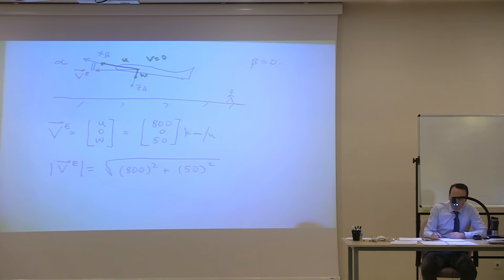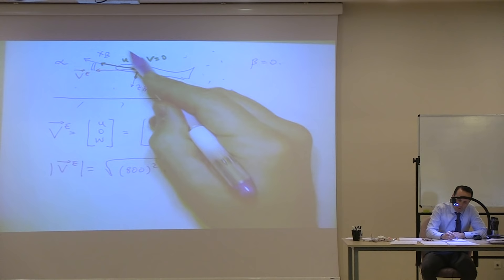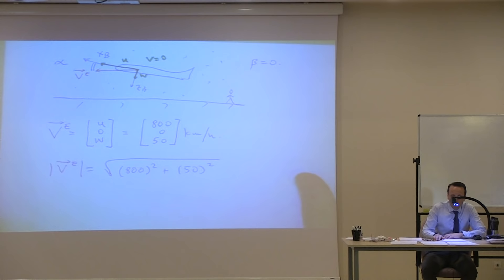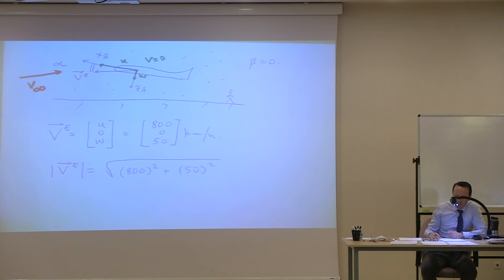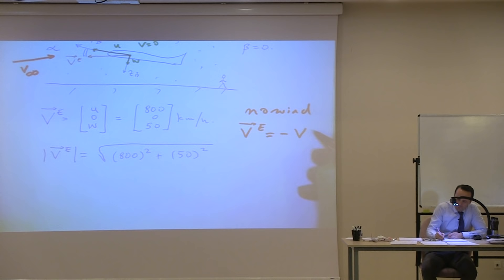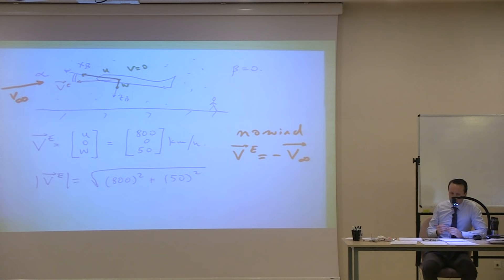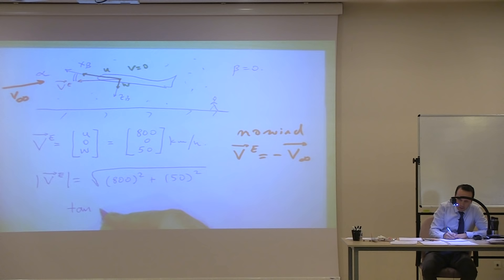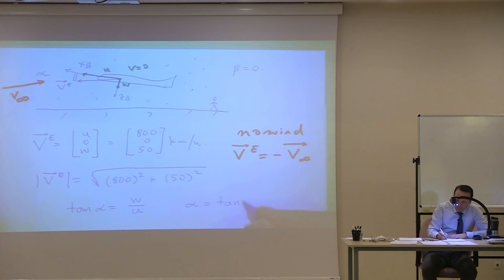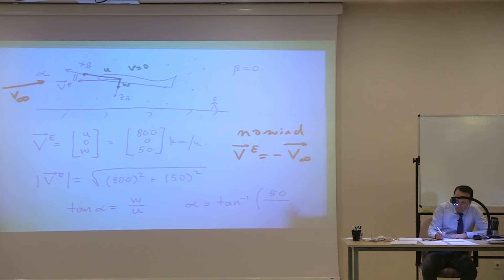If there's no wind, you could say V_infinity is in this direction too — opposite to the airplane's velocity vector. So V_infinity is equal to this, just in the opposite direction. Can you find alpha from this picture? Tangent(alpha) = W / U, so alpha = arctan(50 / 800). You can find alpha from this information.